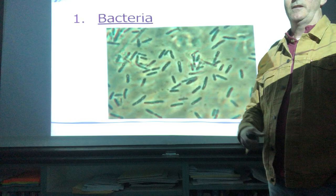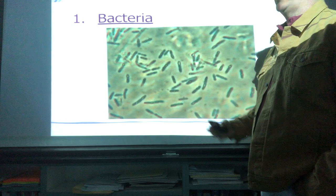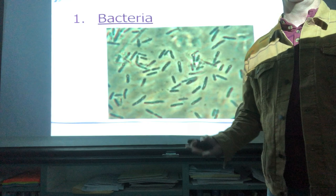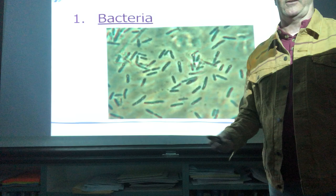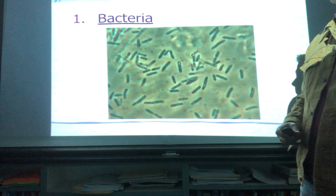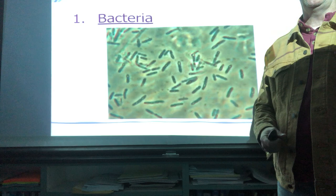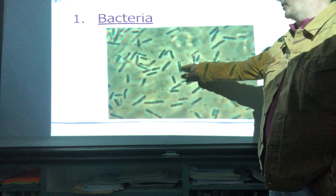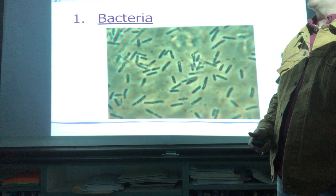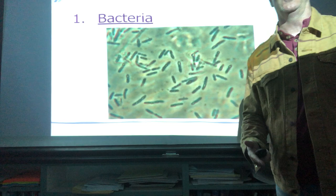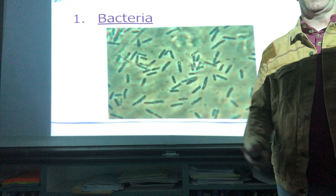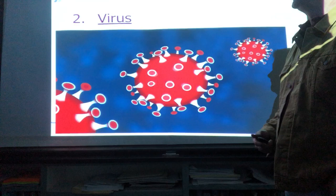Bacteria are primitive cells that reproduce by themselves — they are asexual. Bacterial cells can be seen dividing under high school microscopes. If you've ever had strep throat, you've had a bacterial infection from the streptococcus bacteria. The great thing about bacterial infections is that if they're identified as bacterial, a doctor can prescribe antibiotics — medicines that destroy the outer cell wall of bacteria. Antibiotics like penicillin, amoxicillin, and the Z-pack all work to kill bacteria.